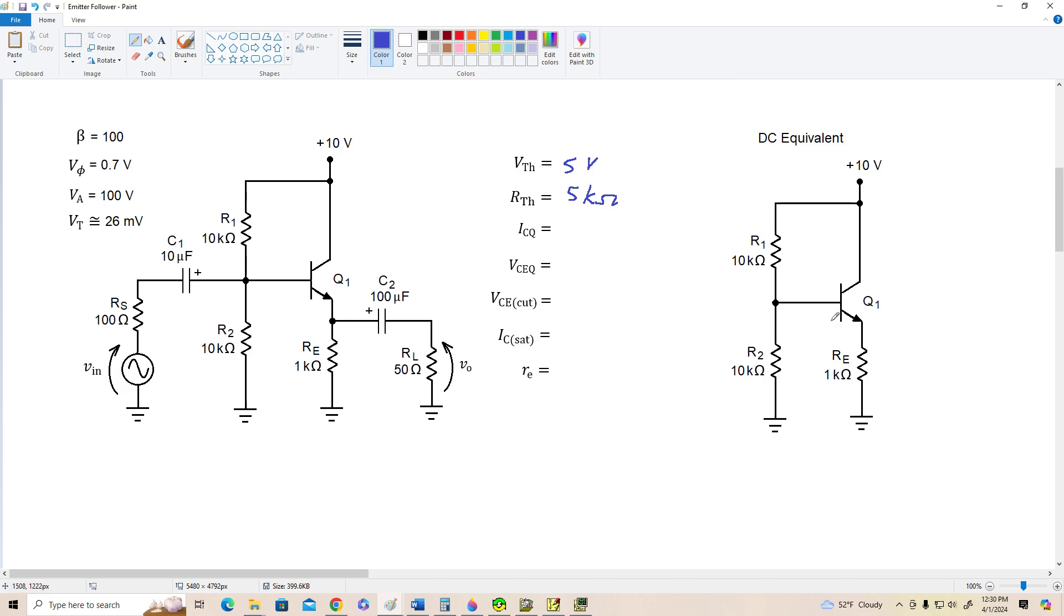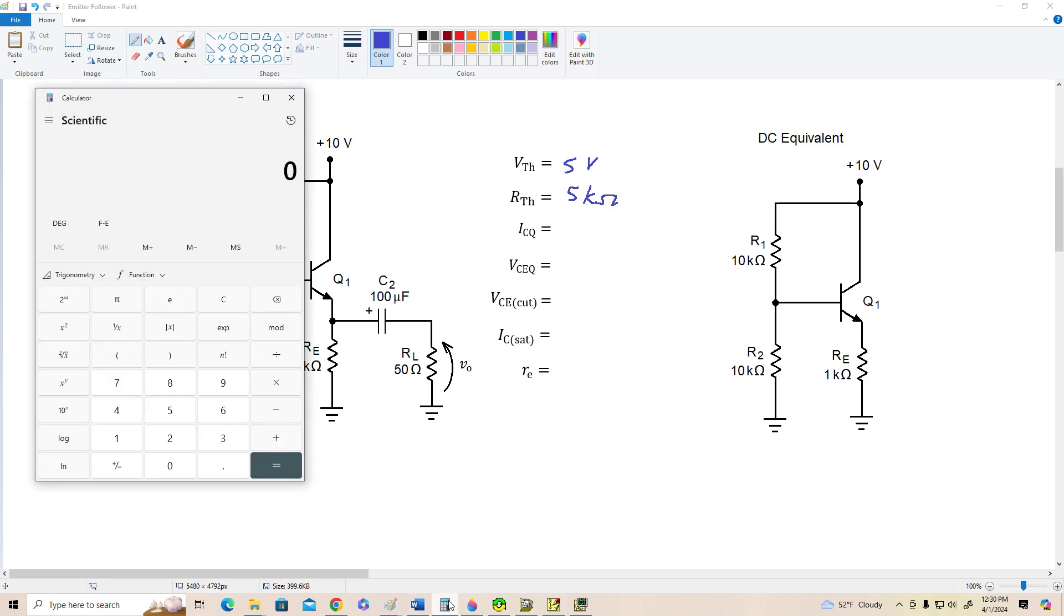ICQ will be VTH minus VBE divided by RE plus RTH over beta. Beta is 100, so that's going to be 4.3 volts divided by 1050 ohms. And that gives us about 4.1 milliamps.